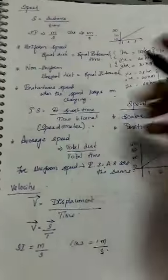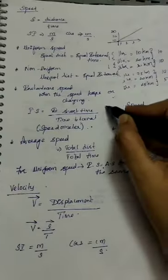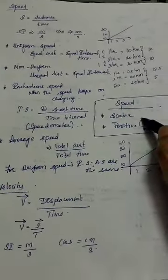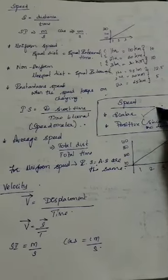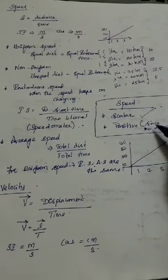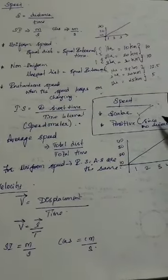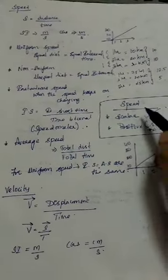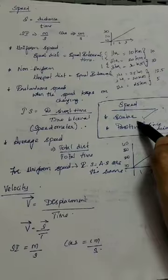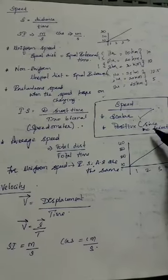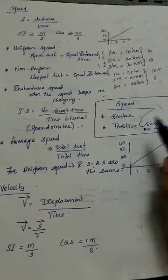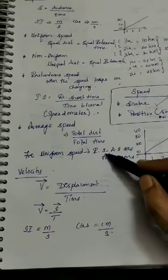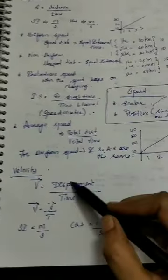To summarize speed: speed is a scalar quantity and it is always positive. It will not take any negative or zero value because it does not have direction. Speed is a scalar quantity and takes only positive values.